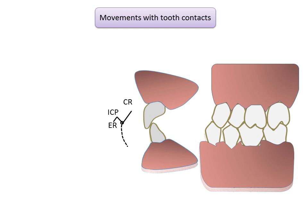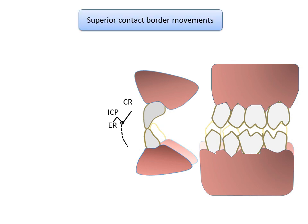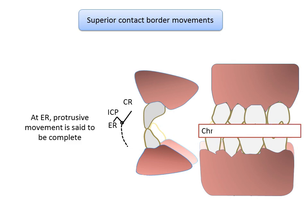When the mandible is protruded from maximum intercuspation, contact occurs between the incisal edges of the mandibular anterior teeth. When the mandible slides forward and the mandibular and maxillary anterior teeth are in an edge-to-edge relation, the protrusive movement is said to be complete. The mandible is guided by the anterior teeth during protrusive movement, followed by complete disocclusion or separation of the posterior teeth, known as Christiansen's phenomenon.